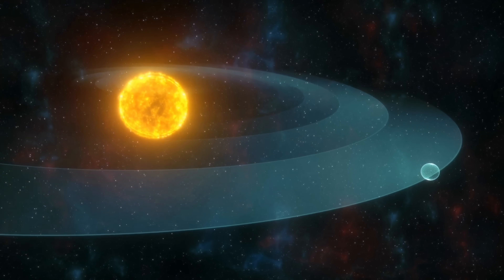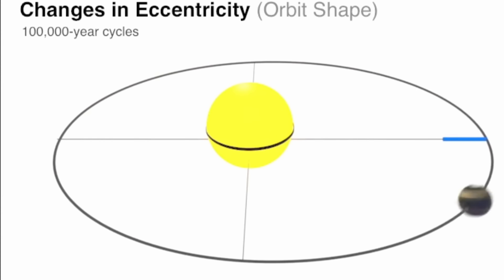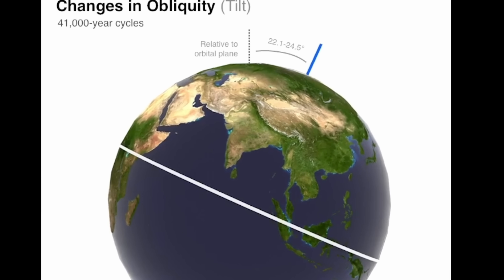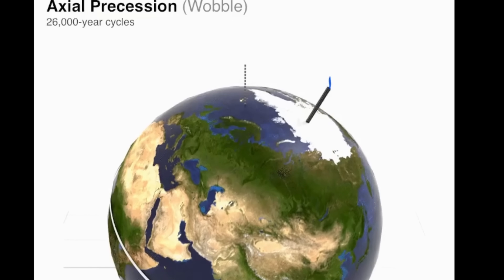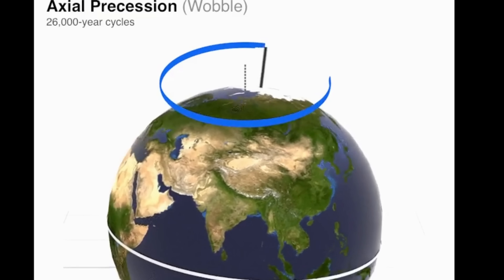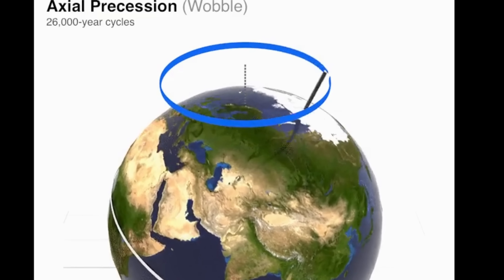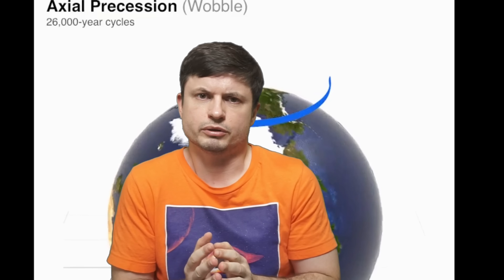Though at first it was not clear why this was happening, in the early 20th century the Serbian mathematician Milutin Milankovic proposed a potential explanation involving various cycles in regards to Earth's orbit. For example, cycles involving changes in eccentricity which seem to happen every 100,000 years, changes in obliquity or essentially the tilt of the planet which seems to occur every 41,000 years, or axial precession — the wobble of the planet — which seems to change anywhere between 19,000 to possibly 26,000 years.